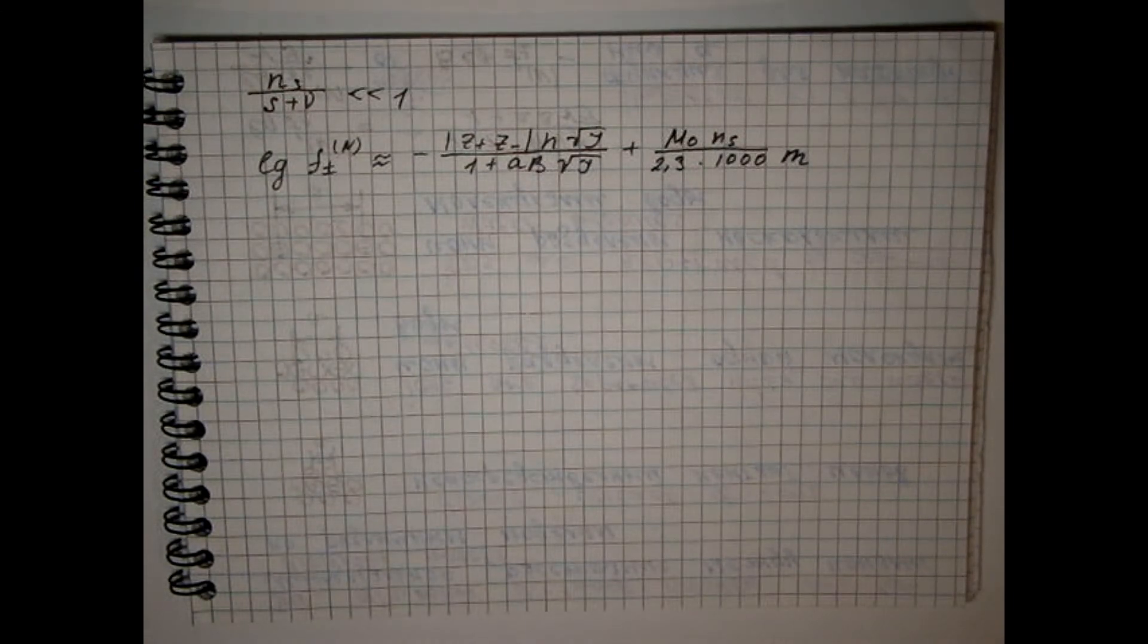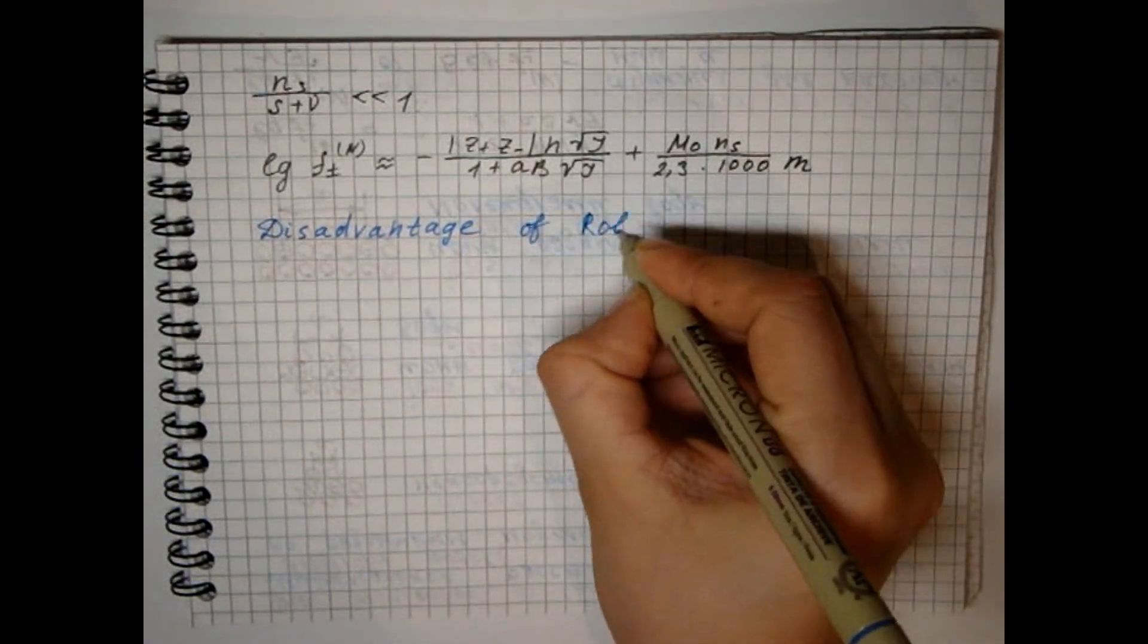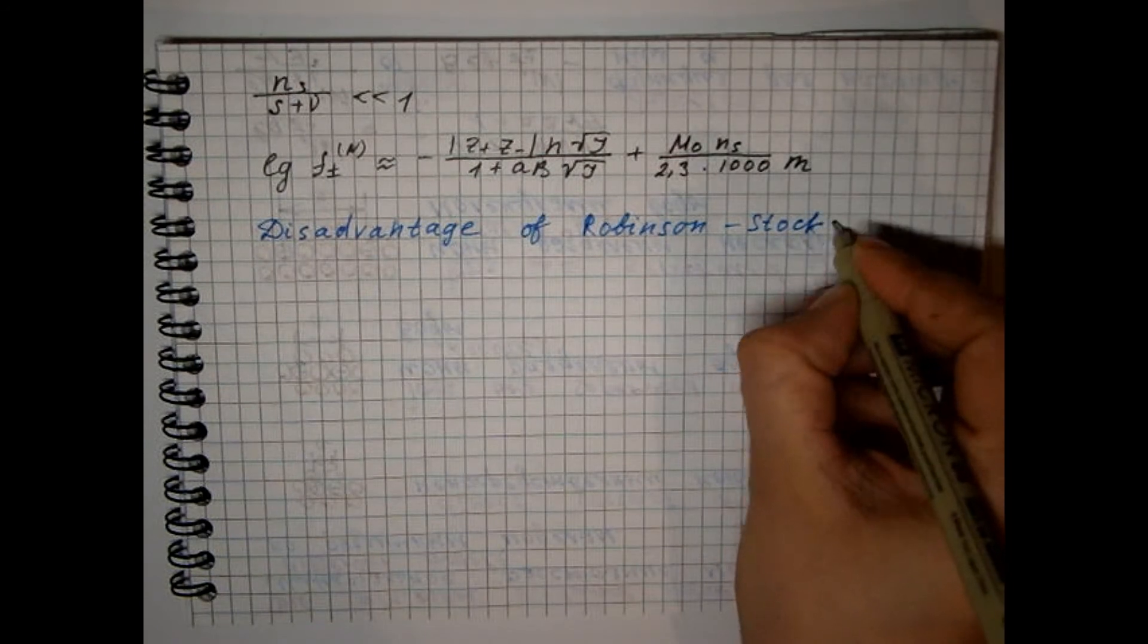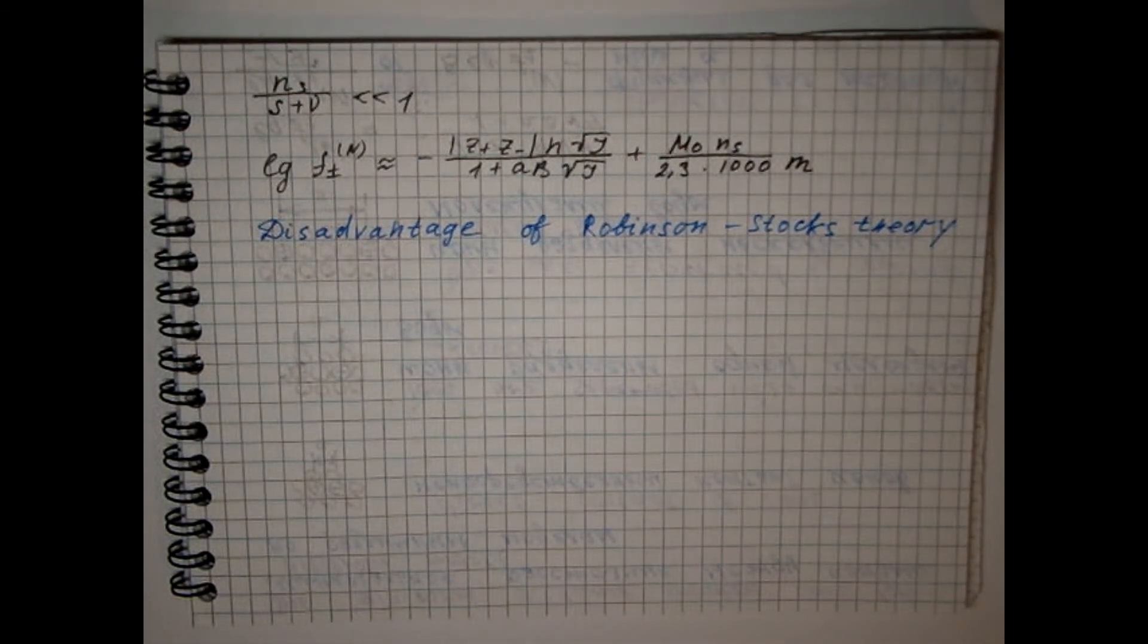the third approximation of the Debye-Huegel theory, which to some extent justifies the third approximation of the Debye-Huegel theory. The disadvantage of the Robinson-Stokes theory is that the solvation numbers obtained from a comparison of the experimental data with the equation are not additive for individual ions.